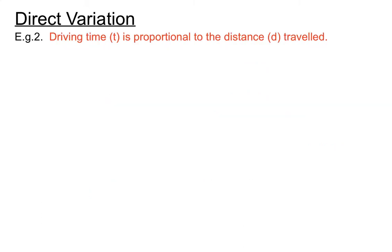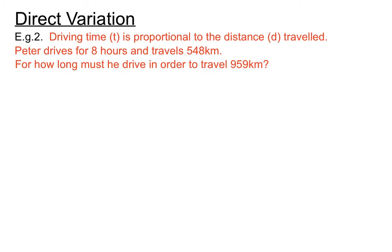Let's have a look at another example. This one's from real life. Driving time T, we're going to call it T for time, is proportional to the distance D travelled. Notice how we've assigned a letter to each of these two ideas before we've even started. Peter drives for eight hours and travels 548 kilometres. For how long must he drive in order to travel 959 kilometres? Assuming he drives at the same rate, of course, he doesn't speed up or slow down there. Let's assume a constant average speed.